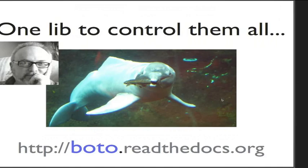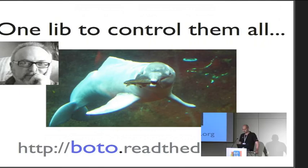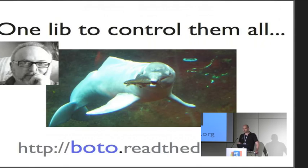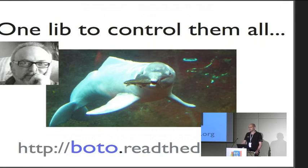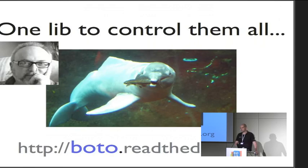So, Boto. Boto was started by this guy, Mitch Garnett. He also used to work for AWS, but he left the company. Now the project is managed by AWS, which means we make sure the code is up to date. But we are also very happy about contributions. I checked on GitHub last week — we had nearly 400 contributors to the project, over 6,000 commits, and that is just GitHub history from somewhere in 2010.